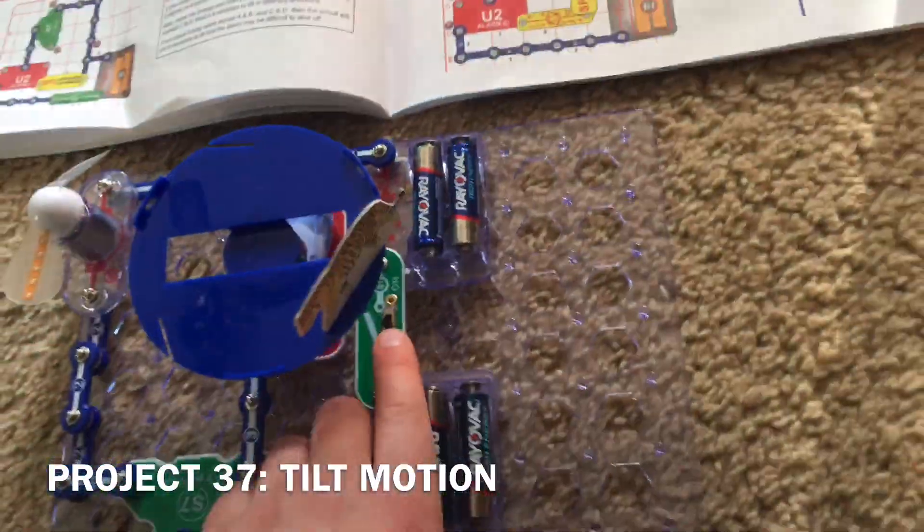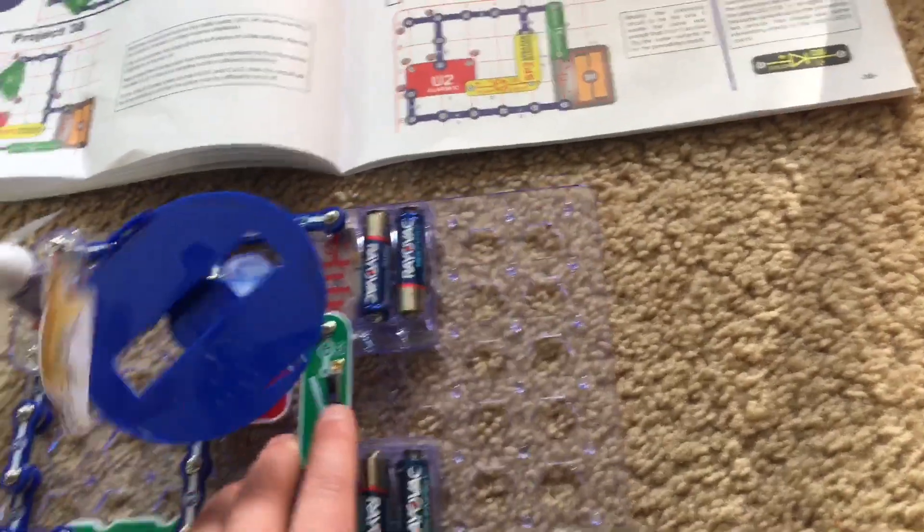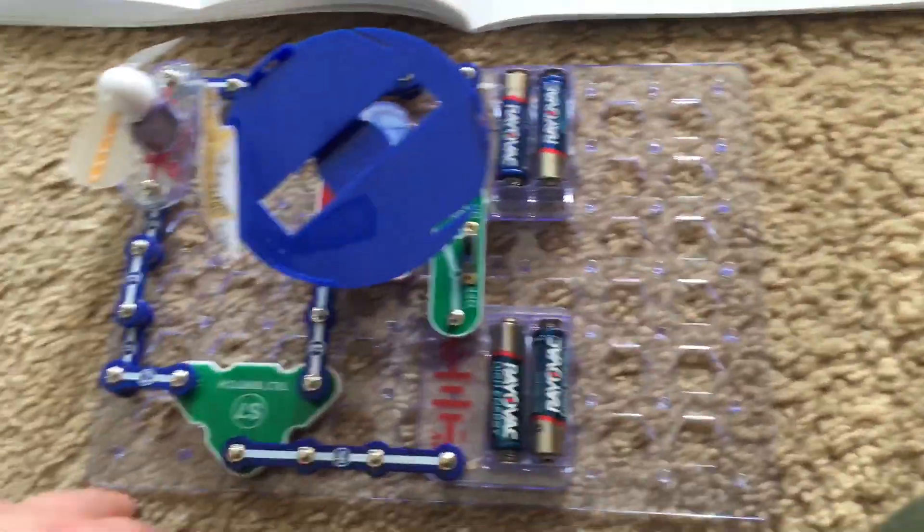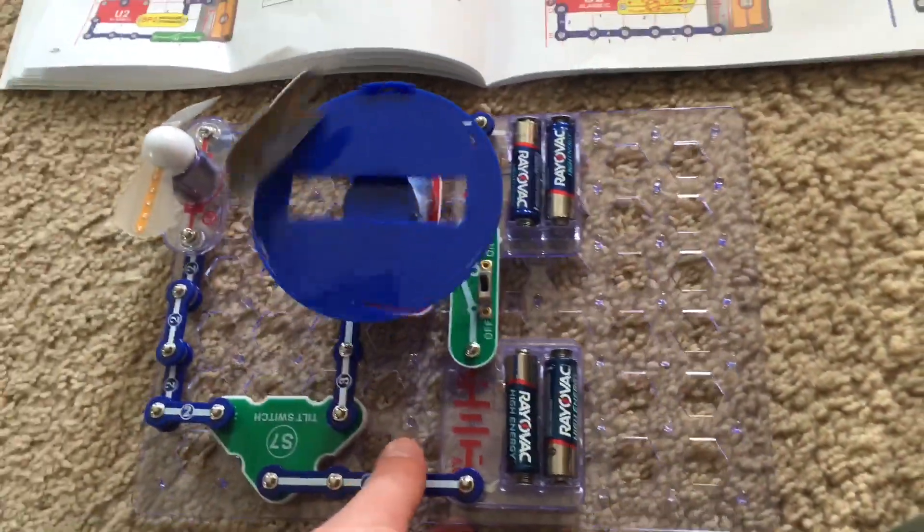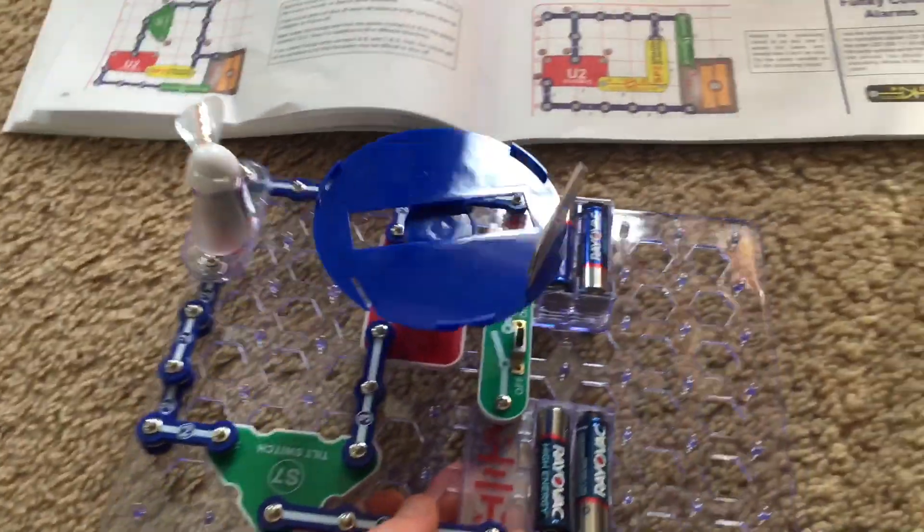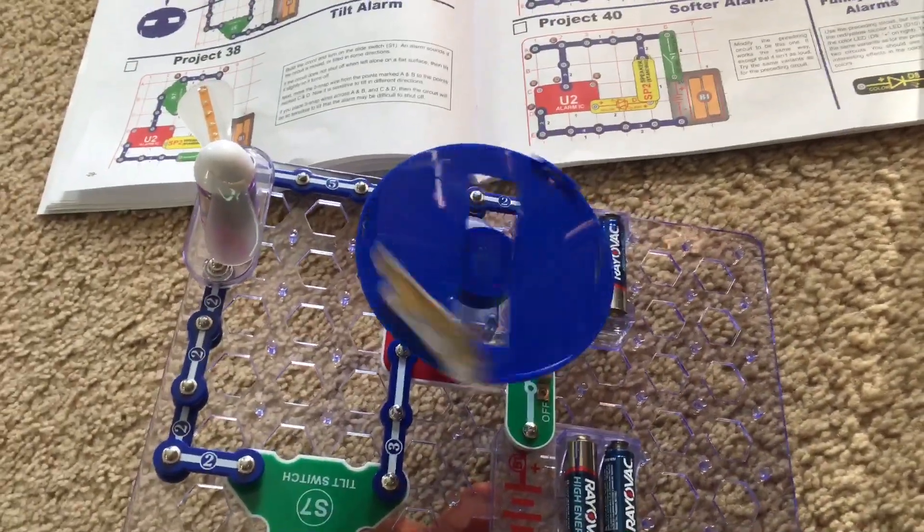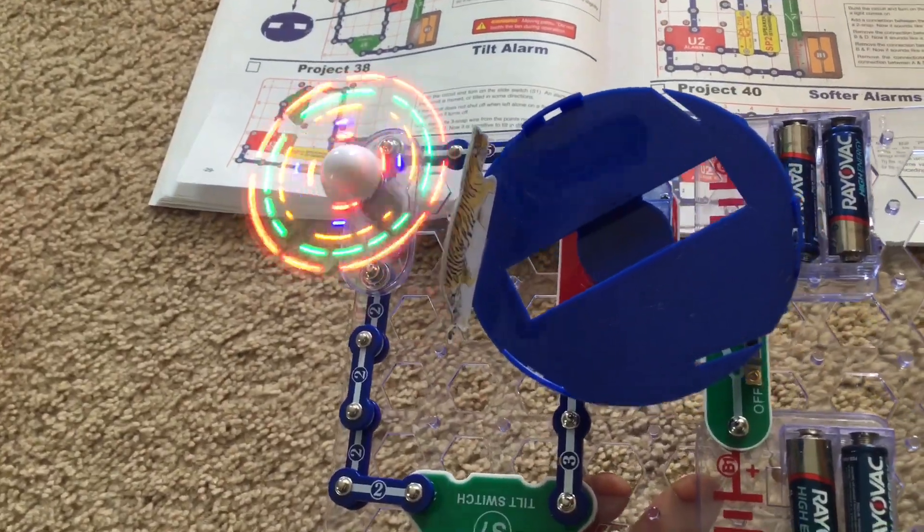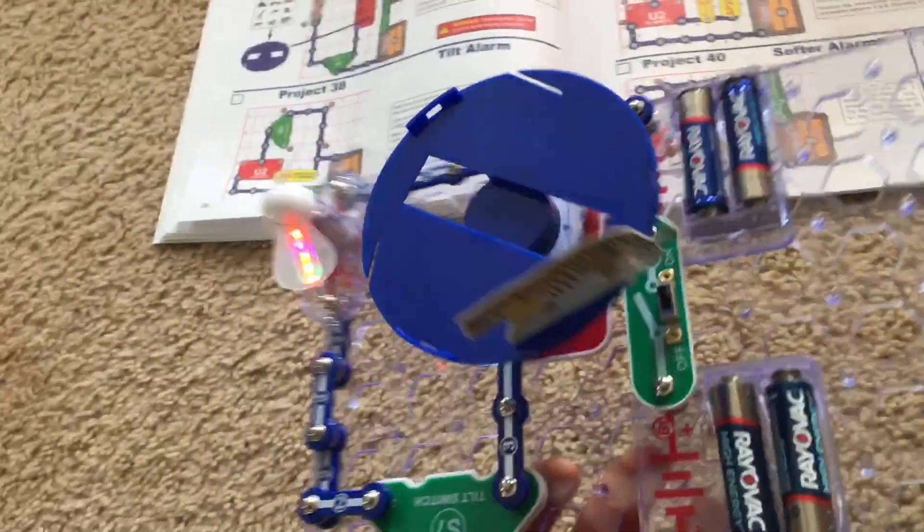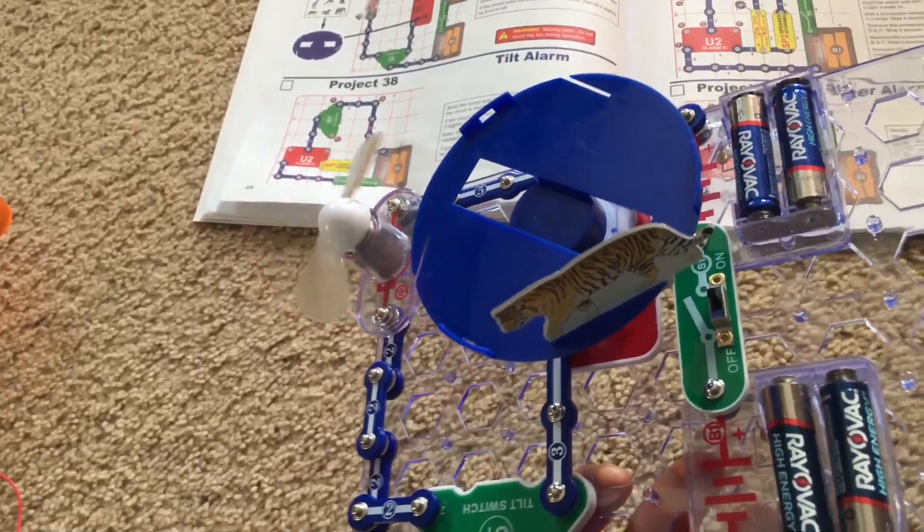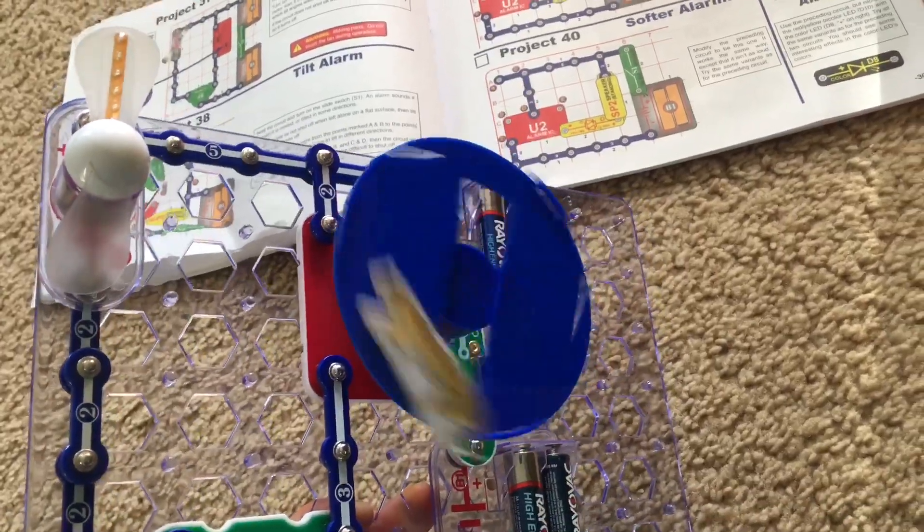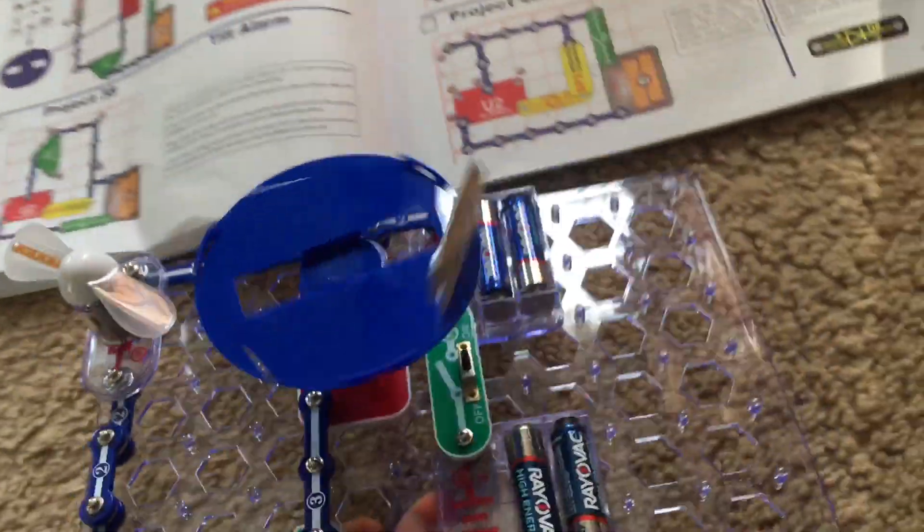I'm going to turn on the slide switch and the merry-go-round will spin briefly and then when I lift the circuit and move it in a certain direction either the merry-go-round will spin or the light fan will spin. You'll notice that when I tilt it to the left the light fan spins and when I tilt it to the right the merry-go-round spins and place figures on the merry-go-round if desired.